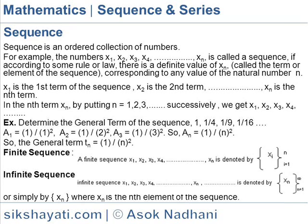Finite sequence. If the number of elements in a sequence is finite, the sequence is called a finite sequence. A finite sequence X1, X2, X3 is denoted by XI for I is equal to 1 to N.